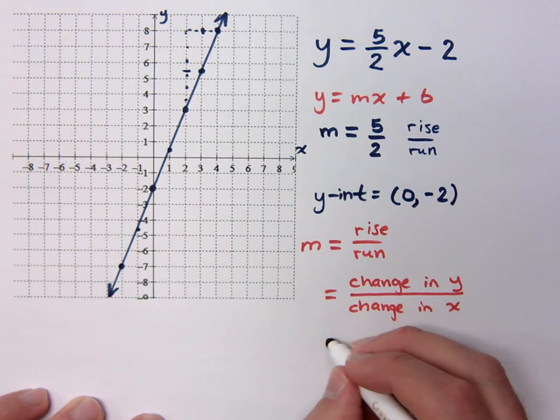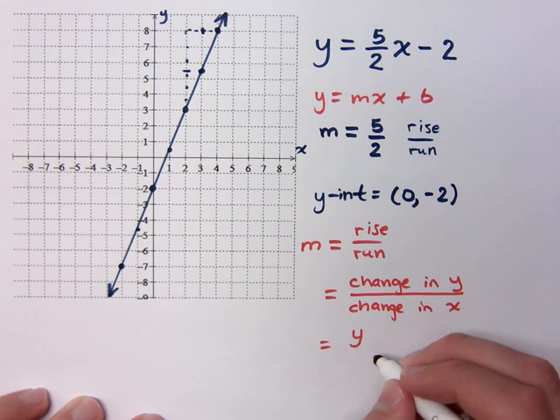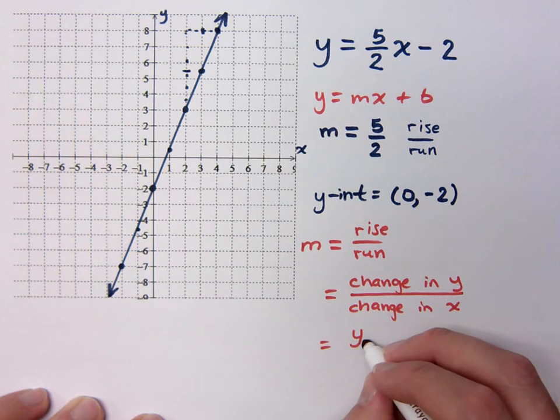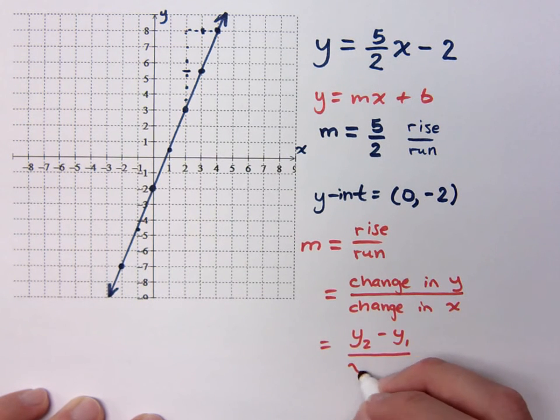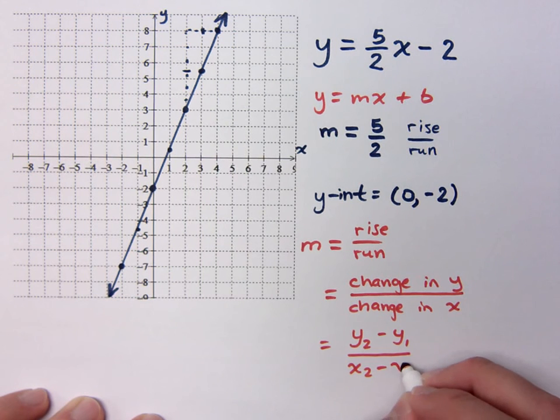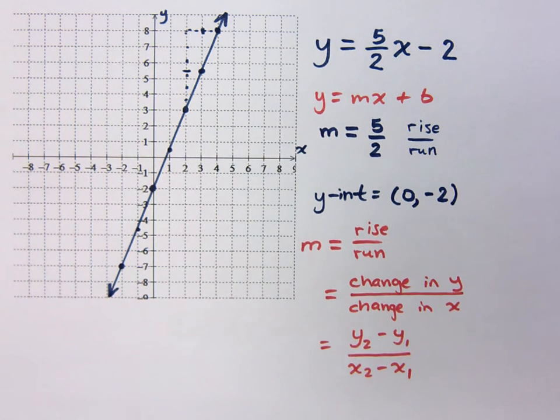So the formula for this, to find the change in Y, it's Y2 minus Y1 over X2 minus X1.